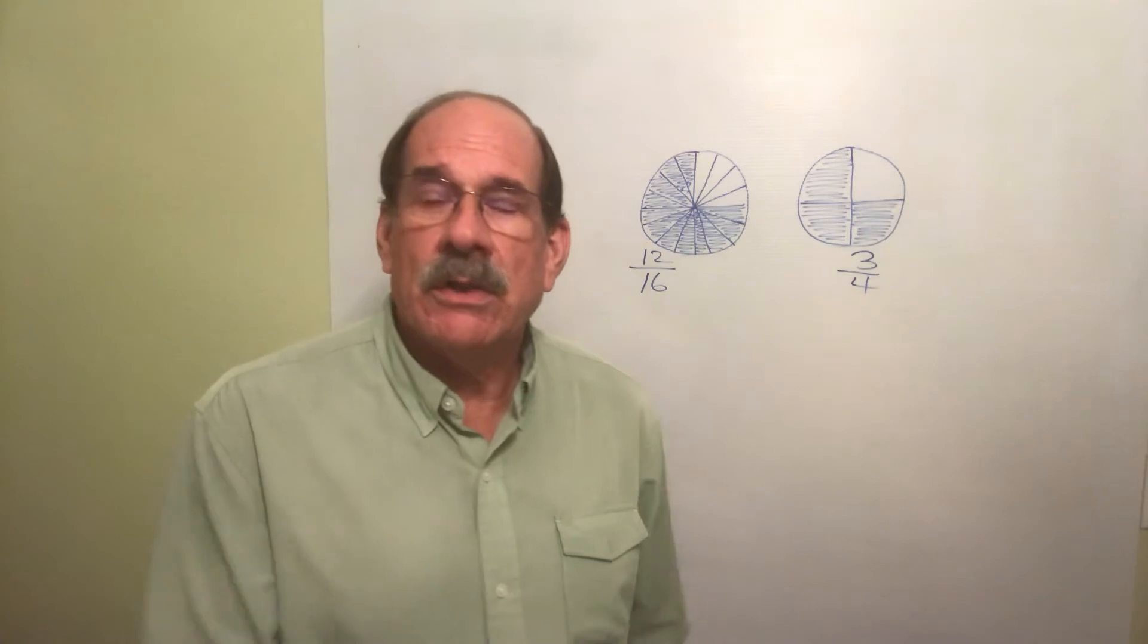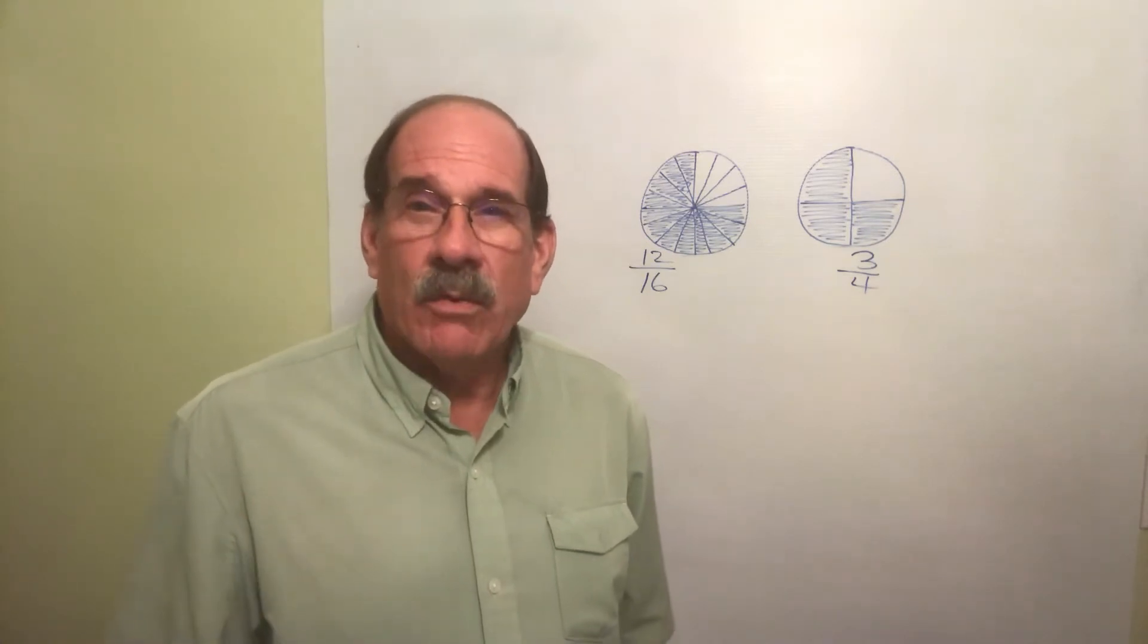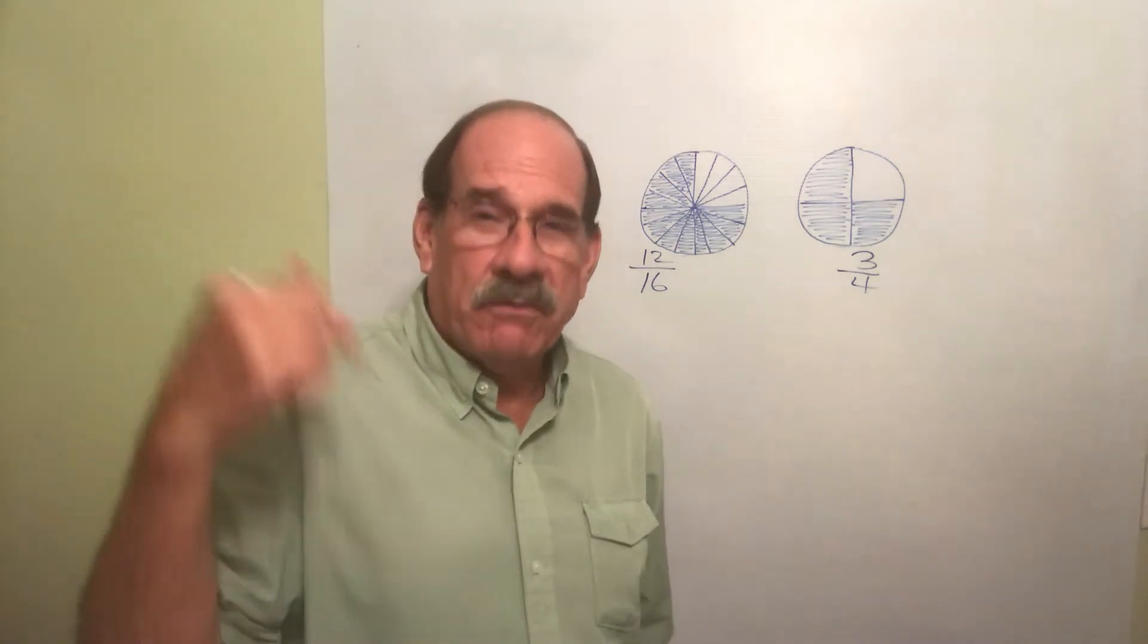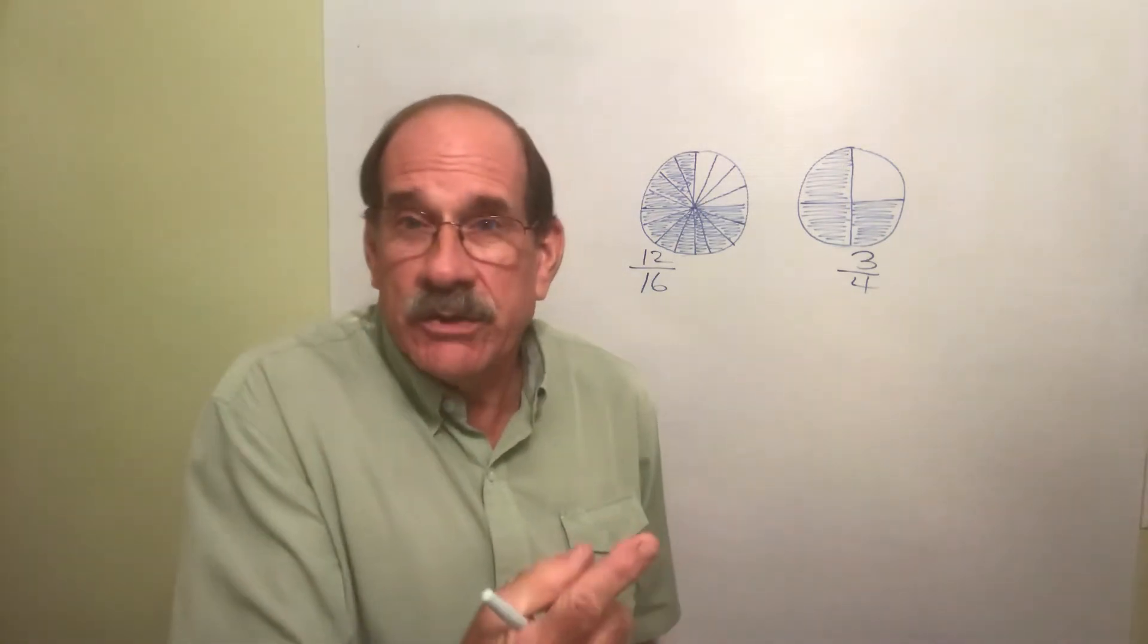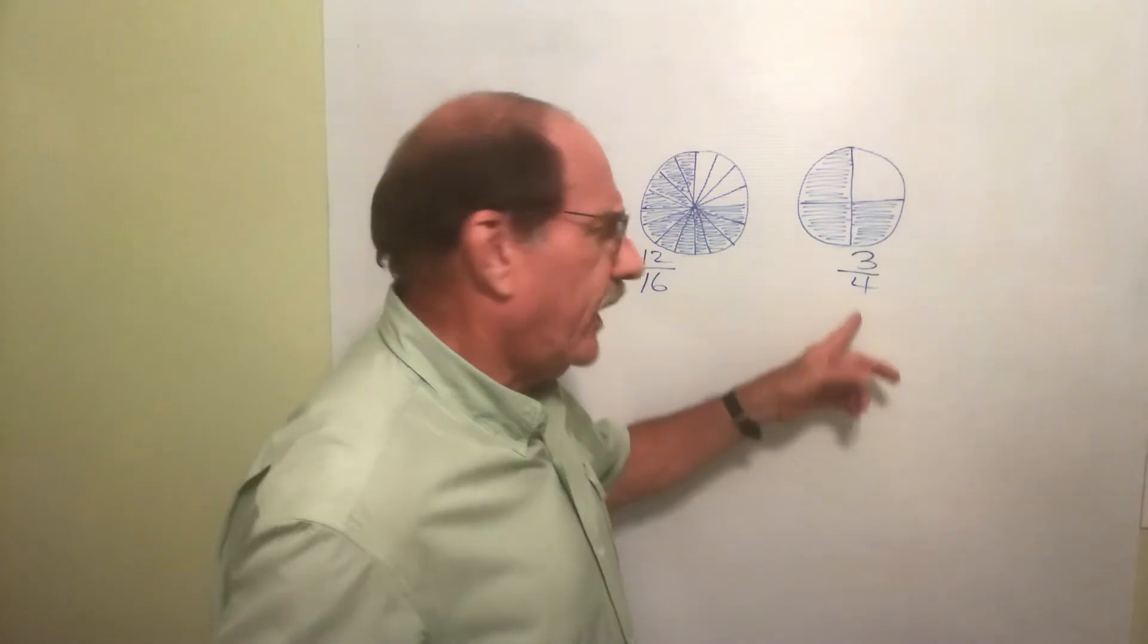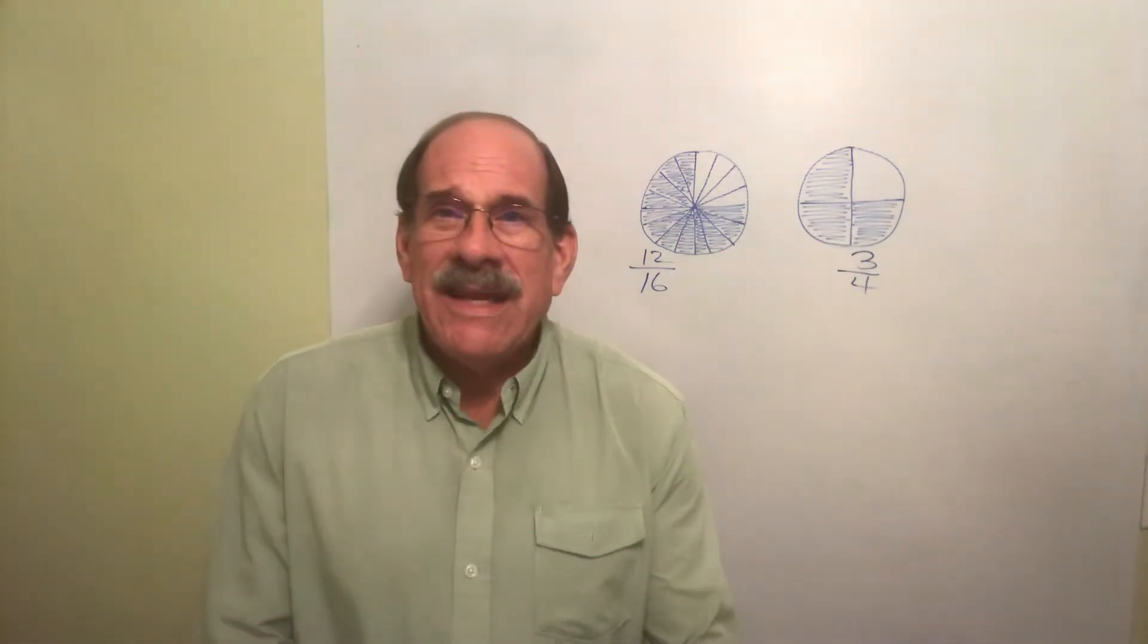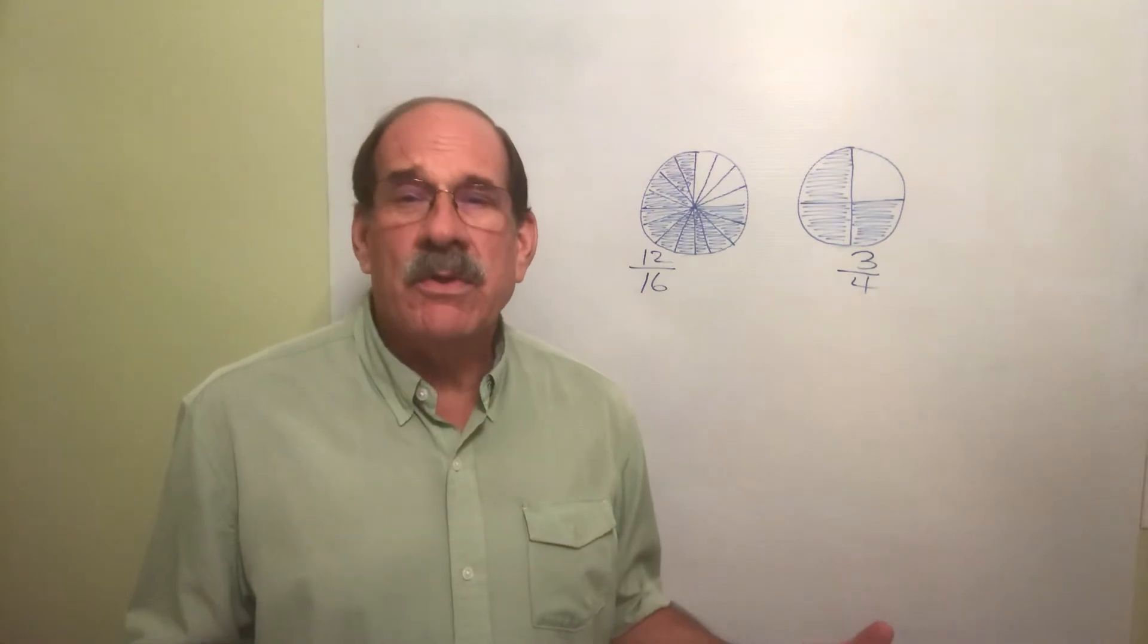I mean if I give you a fraction and say reduce to lowest terms, how many correct answers are there to that problem? Only one. There's only one way to reduce a fraction to lowest terms. But if I just say there's a fraction, enlarge it, how many ways can you do that? An infinite number of ways.